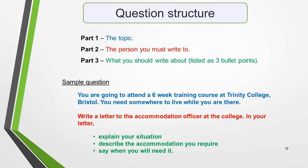Before we look at how to structure a letter, we'll first examine the structure of the question. The structure of the question will always be the same: Part 1 is the topic, Part 2 is the person you must write to, and Part 3 is what you should write about, which will be listed as three bullet points. Here's another sample question — I've used colour coding to highlight the three different parts. Pause the video and study it for a moment. Recognising the three parts will help you to quickly analyse the question and plan your answer.